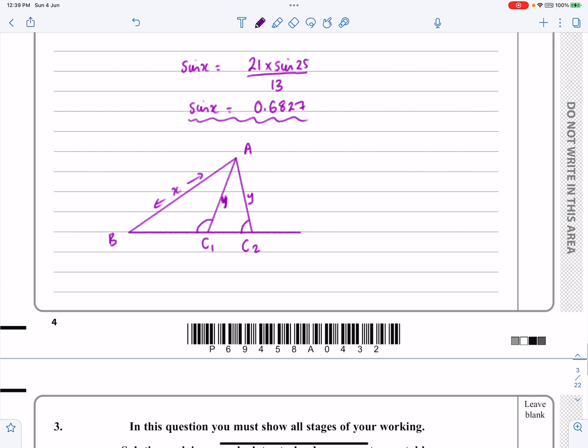If we do sin inverse of 0.6827, we're going to get an acute value for our answer because the calculator doesn't know what we're doing. So the calculator just gives me 43.05 degrees. That would be sort of like this case here. But our answer could be an obtuse angle. So actually what we should technically do is to write down that the inverse sin of 0.6827 is 43.05 or 136.95.